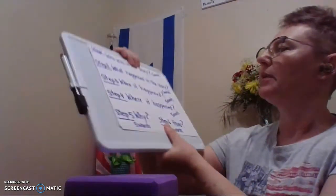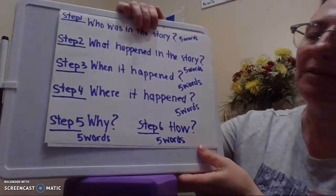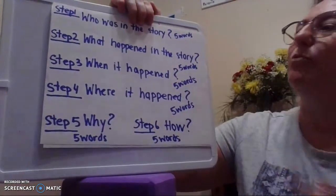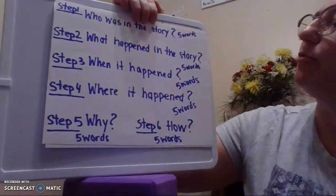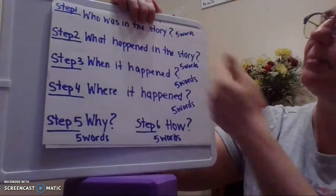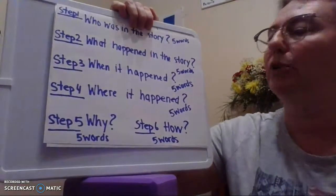Step one: I write who was in the story in five words or less. I write what happened in this story in five words or less. This one's going to be the hardest one to do in five words or less.